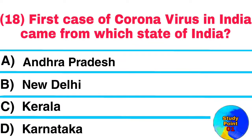Question No. 18. First case of Coronavirus in India came from which state of India? Answer: Kerala.